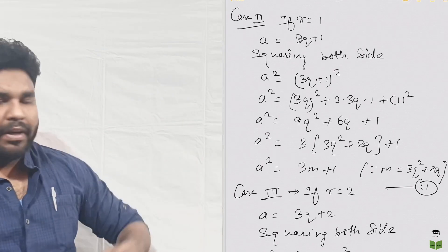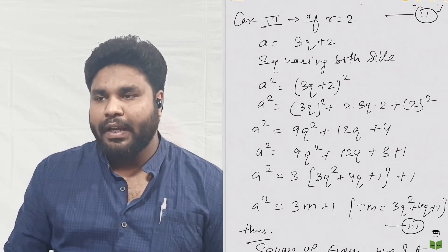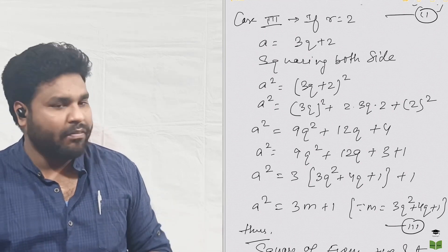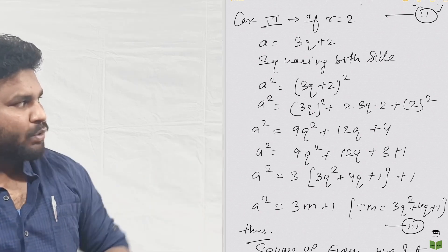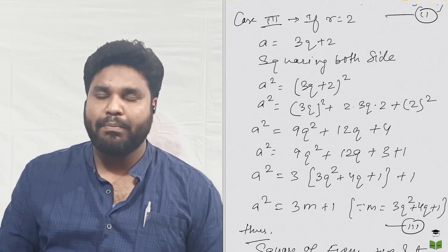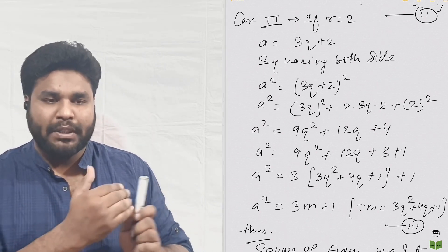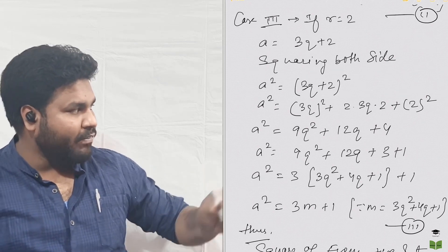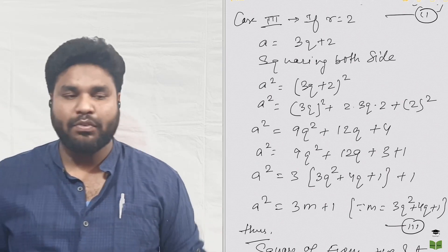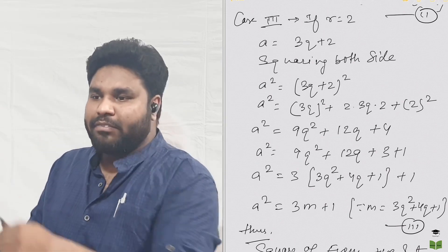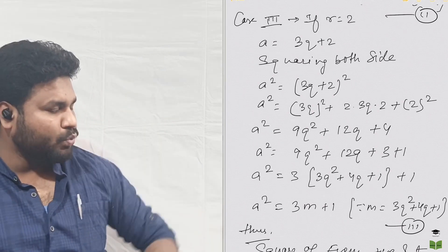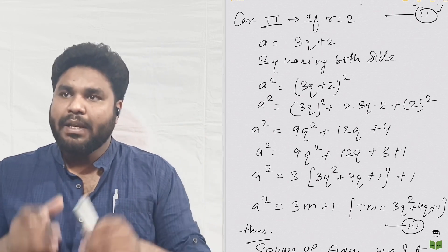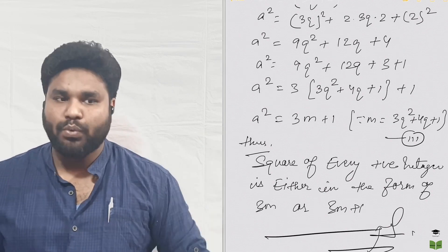Case 3: when the remainder is 2, then A equals 3Q plus 2. Squaring both sides, A squared equals (3Q plus 2) squared. Using the formula A squared plus 2AB plus B squared, we get 9Q squared plus 12Q plus 4. Writing 4 as 3 plus 1, and taking 3 as common from 9Q squared, 12Q, and 3, we get A squared equals 3(3Q squared plus 4Q plus 1) plus 1, which is A squared equals 3M plus 1, where M equals 3Q squared plus 4Q plus 1. So in all three cases, the square of any positive number is either in the form of 3M or 3M plus 1. Thank you.